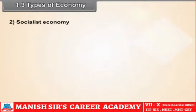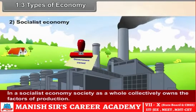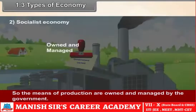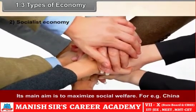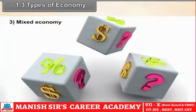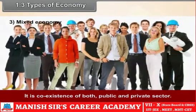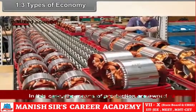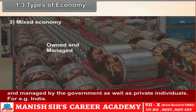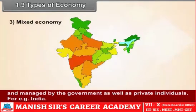In a socialist economy, society as a whole collectively owns the factors of production, so the means of production are owned and managed by the government. Its main aim is to maximize social welfare. For example, China. Mixed Economy is a co-existence of both public and private sector. In this case, the means of production are owned and managed by the government as well as private individuals. For example, India.